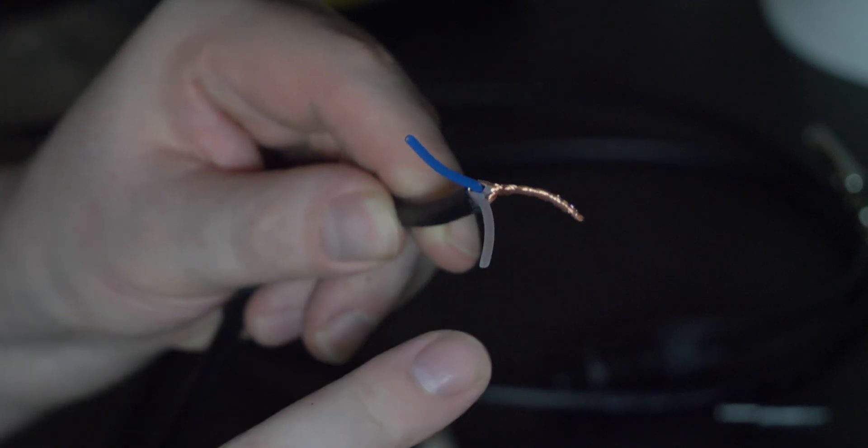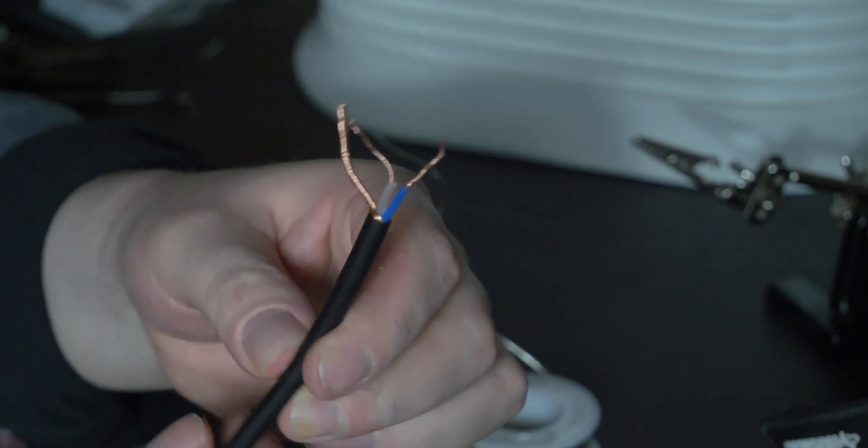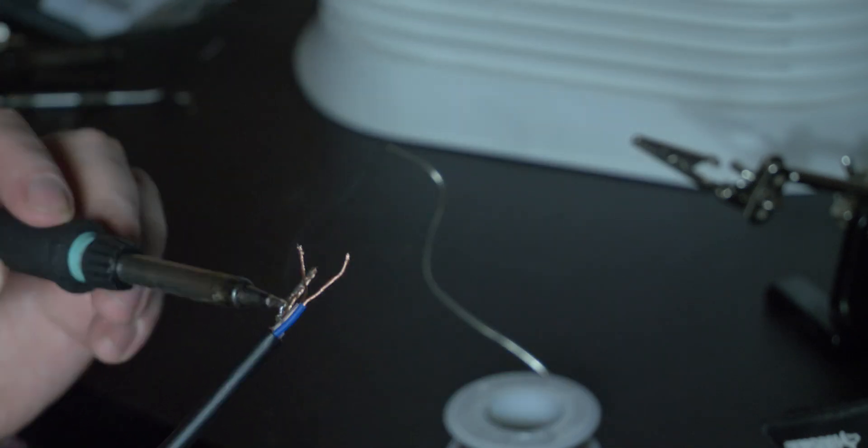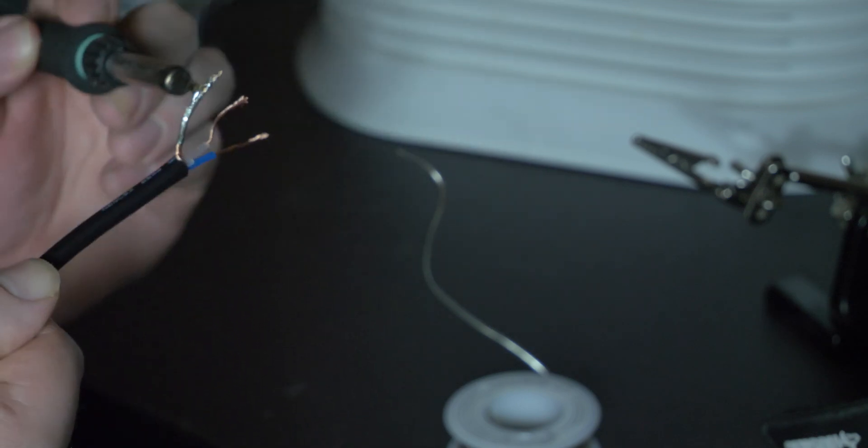Then you're going to strip your wire ends. Once this is done, you can tin your wires with solder. This will help keep all of the copper together, and create a better bond with the plug terminals.